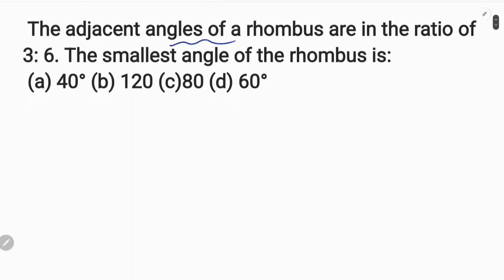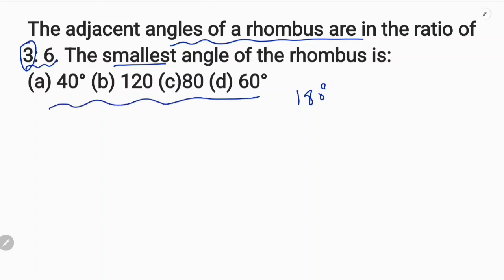The adjacent angles of a rhombus. The adjacent angles of a rhombus are in ratio 3 to 6. The smallest angle is 3. The lower angle is 3. The main angle shows this option for the third angle. The higher angle is 3, the higher angle is 9. 5 minus 30 is 6, the opposite of this.